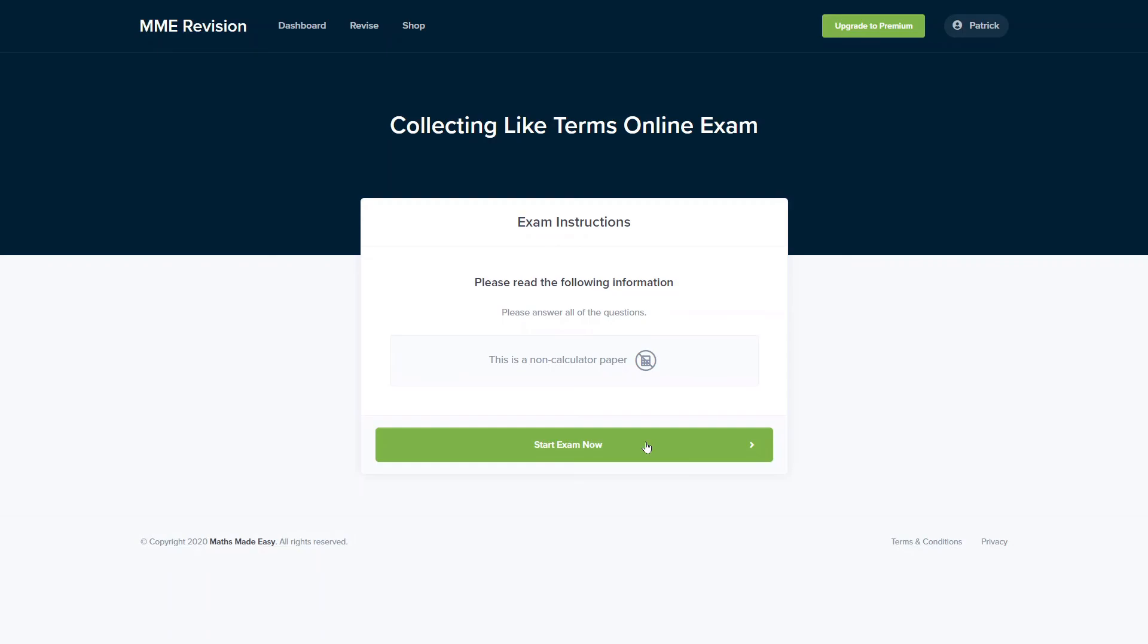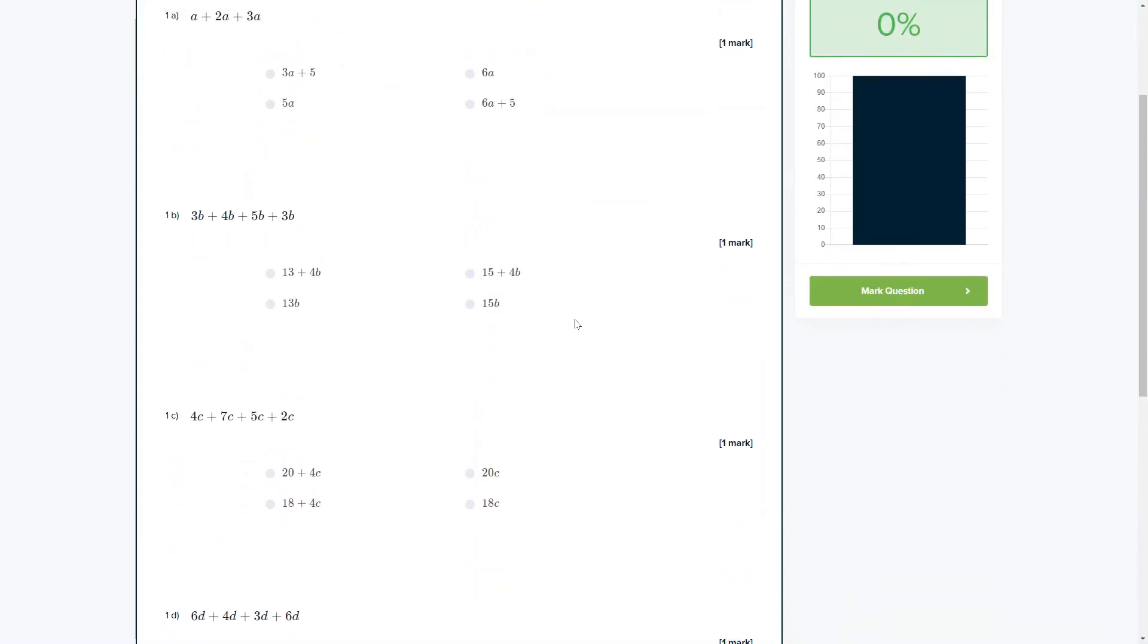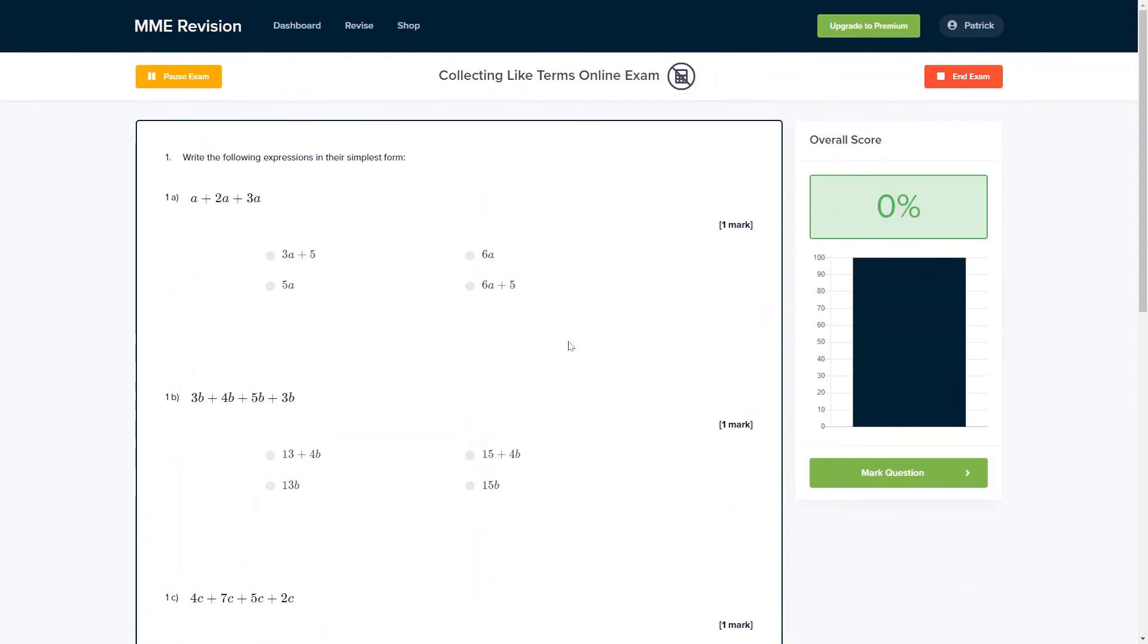Collecting like terms is a skill that's crucial to algebra, so it's important that you get a lot of practice. You can do so with our online exam. This is available through our revision platform. If you take the test you'll find loads of different questions to have a go at, and all of which are instantly marked. So this is a really good way of keeping track of your progress, finding out where you're going wrong and how you can improve. So if you're interested you can click the link below.